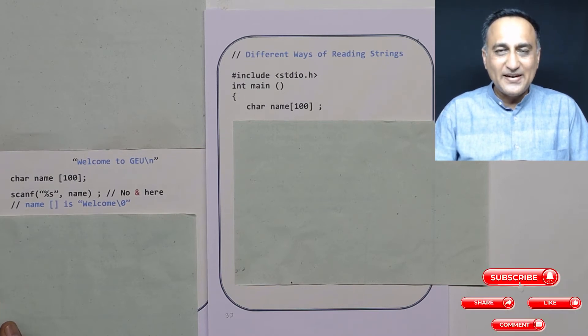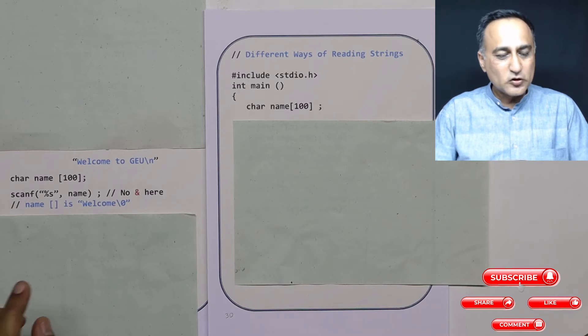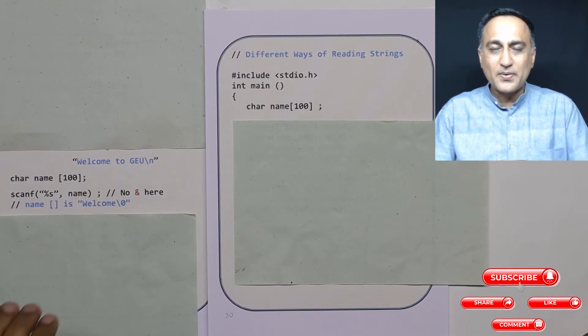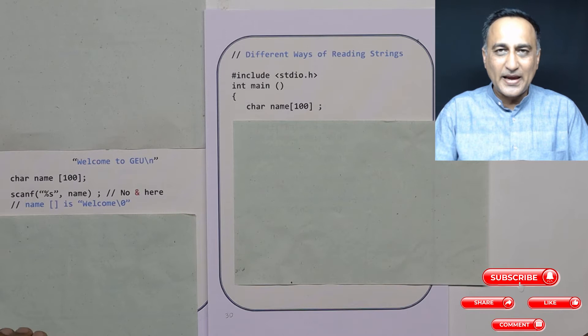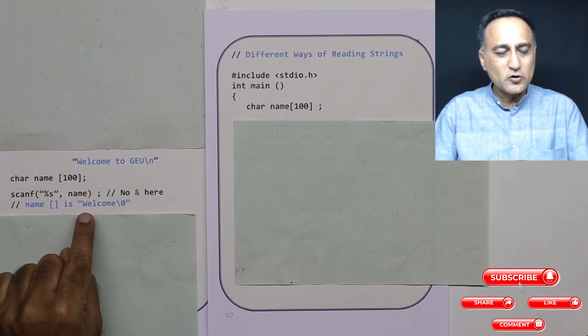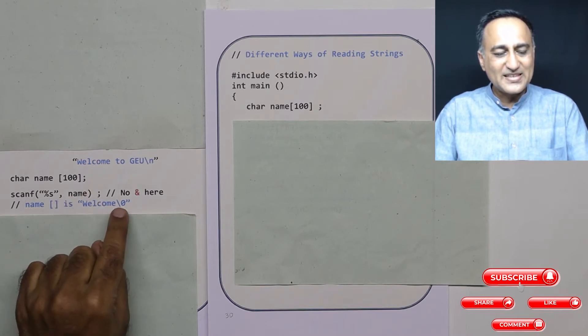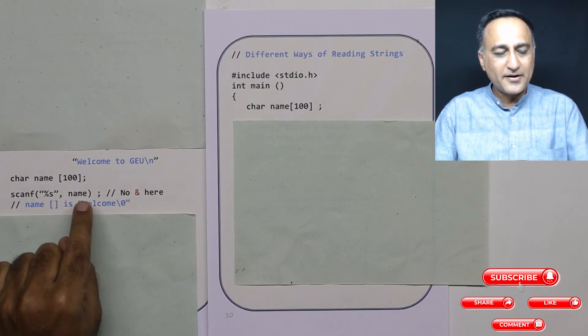So what scanf does is the minute it encounters the first space, it stops reading. So it can be space, it can be the enter key, it can be the tab key. So the minute after any alphabets you press the space, the enter key, or the tab, it's going to stop reading. That's why only 'welcome' is going to be stored in name, and this null character is going to be automatically added to name.